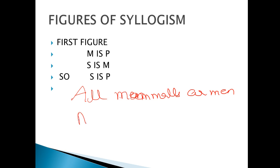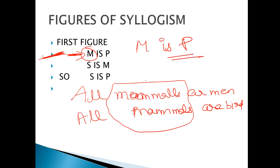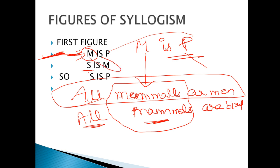Aur yahan par agar hum likhein: all mammals are birds. Toh aap dekhenge dono ke dono first par hain. Lekin hamari first figure ka yeh rule hai — jo hamari middle term hai, woh sirf first statement mein first par aani chahiye. That is, M is P. Is particular line mein, jo hamara mammal hai woh hamara middle term hai aur yeh hamara predicate hai. Lekin second statement mein mammal first par nahi aana chahiye tha.